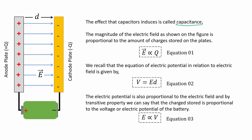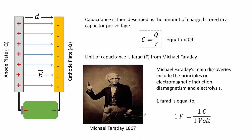The magnitude of the electric field is proportional to the amount of charges stored on the plates. Recalling the equation of electric potential in relation to the electric field given by equation 2, the electric potential is also proportional to the electric field, and by the transitive property we can say that the charge stored is proportional to the voltage or electric potential of the battery. Capacitance is then described as the amount of charge stored in a capacitor per voltage. The unit of capacitance is the farad, named after Michael Faraday.